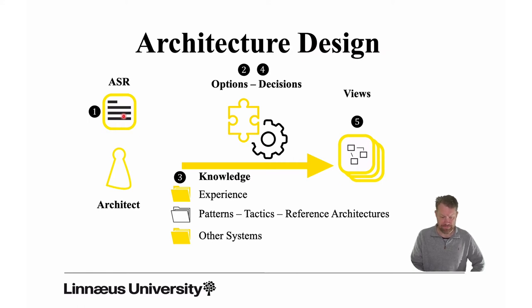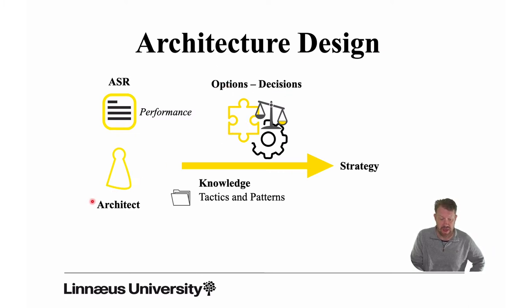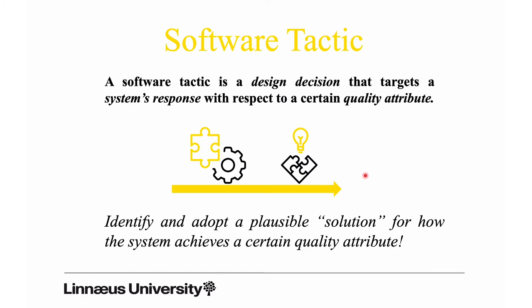Based on the options and ASRs, the architect will start to make decisions, and eventually these decisions are documented in views — in this case a view for performance. With a focus on tactics and patterns, the decisions the architect makes with respect to performance will form a strategy, an architecture strategy for performance, and this strategy is then what you document in your view. To recap: a software tactic is a plausible solution — a mechanism describing structure and behavior that addresses a certain quality attribute, enabling the system to achieve certain quality attributes.